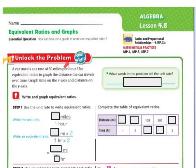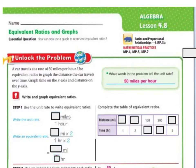Let's unlock the problem. A car travels at a rate of 50 miles per hour. Use the equivalent ratios to graph the distance the car travels over time, with time on the x-axis and distance on the y-axis. What words in the problem tell you the unit rate? The unit rate is 50 miles per one hour — it tells you right there.